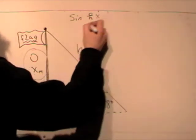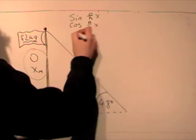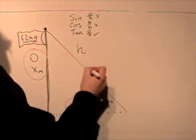So it must be tan, o over a, because we're looking for o and we have a.